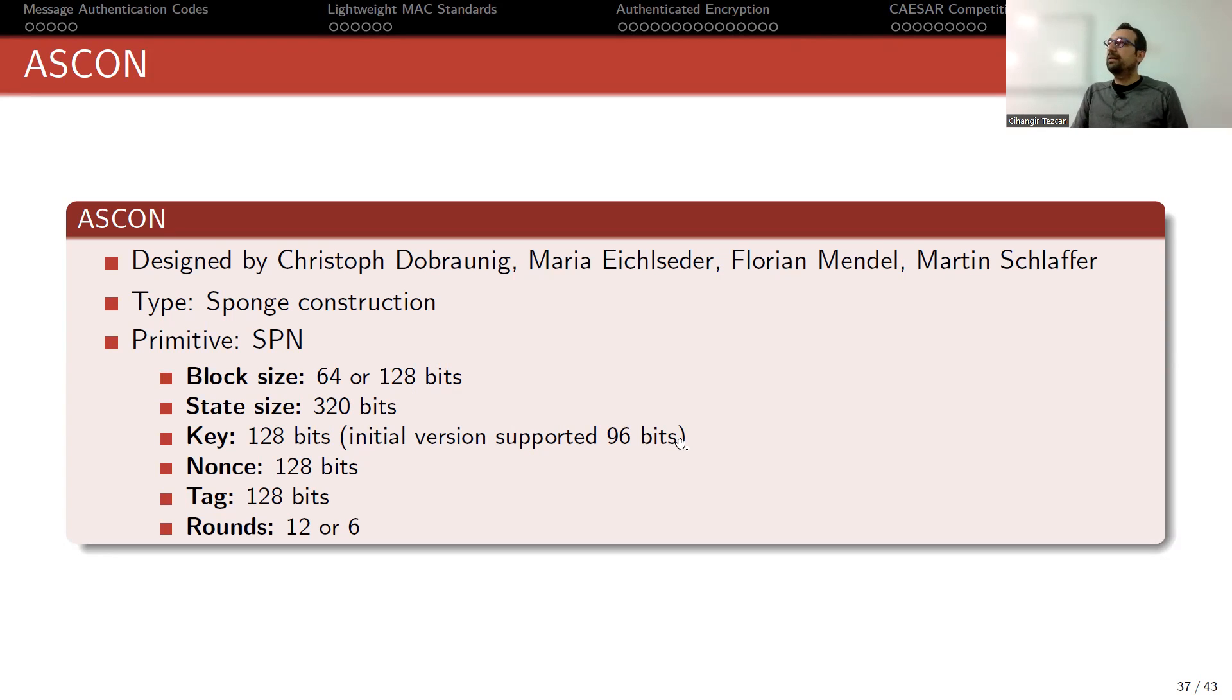The key is 128 bits. In the initial part of the CAESAR competition, ASCON had a variant that supported 96 bits, but nowadays we always say that there is no need to use a secret key that is smaller than 128. So they actually removed this support during the competition, and in their NIST application they only use 128 bits.